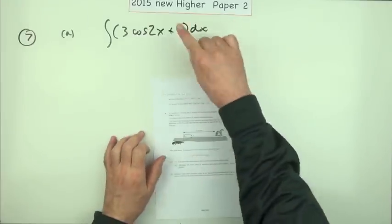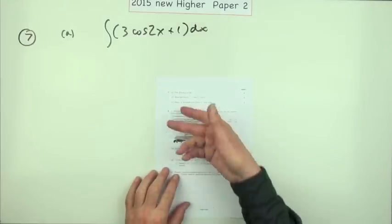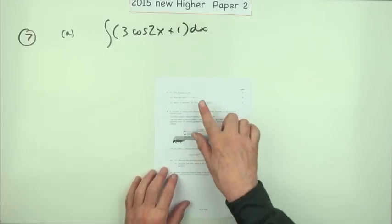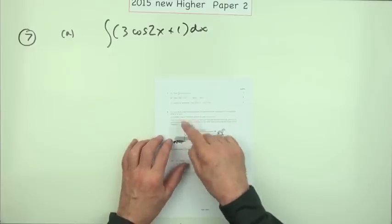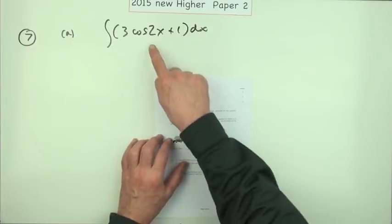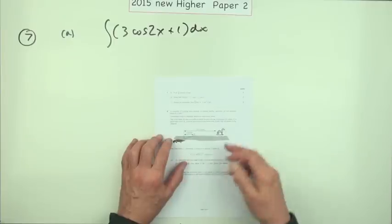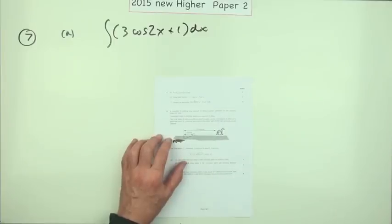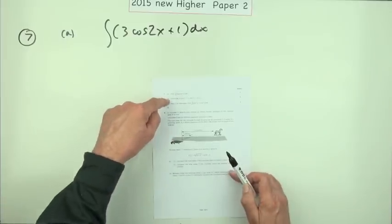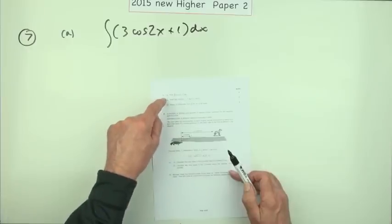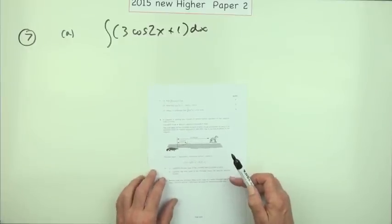So question 7 then from Paper 2 of the 2015 new Higher. Here we go, integration, no calculations because it's not a definite integral, just indefinite integrals, but you've got trig terms. Six marks altogether. Well, it seems to be one of these lead-through questions where you need to know a and b before you can answer c.